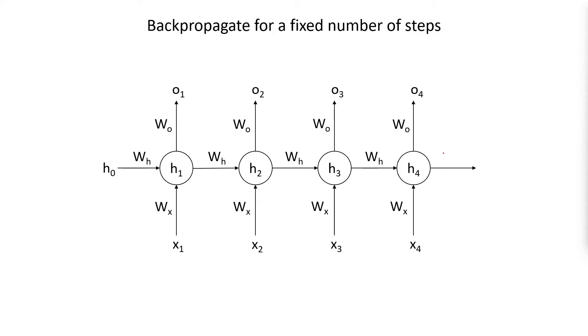So a first possible solution to the problem of vanishing and exploding gradients is that instead of computing the gradients all the way back to the first step, so all the way back here, the gradients for the matrix W_h and W_x.